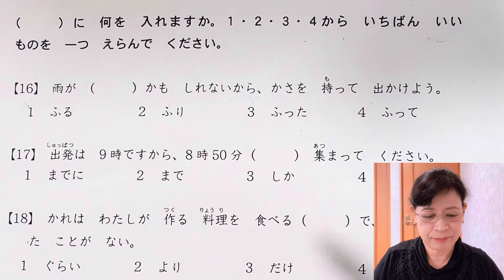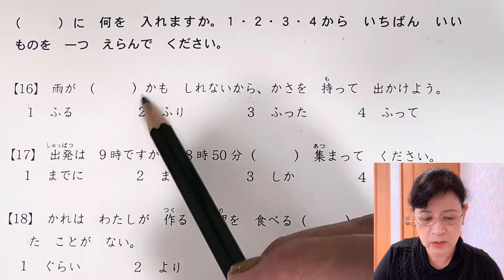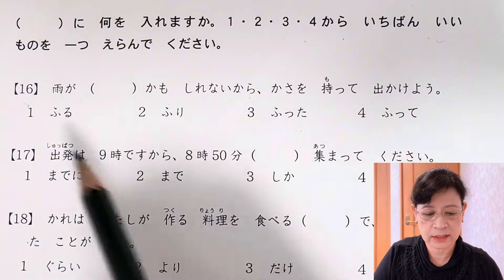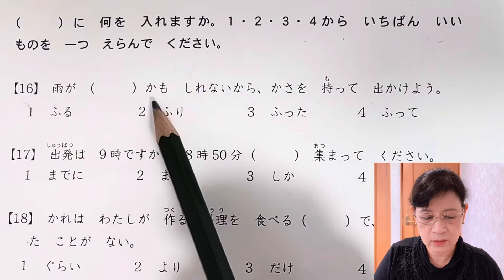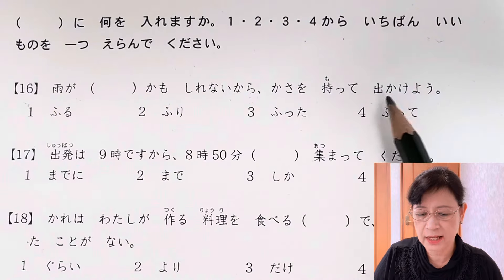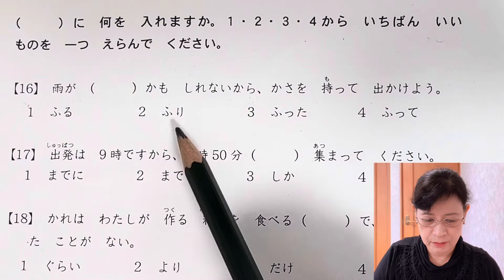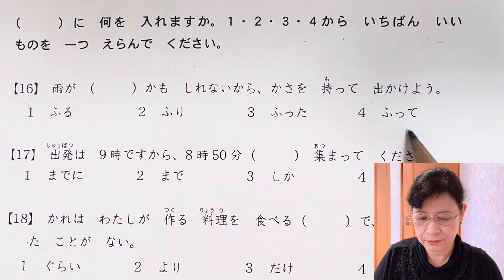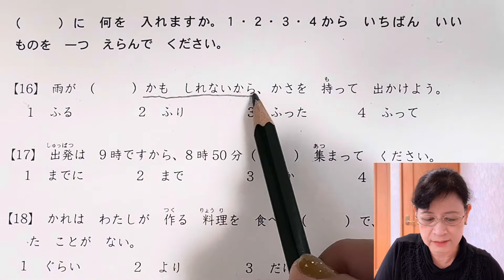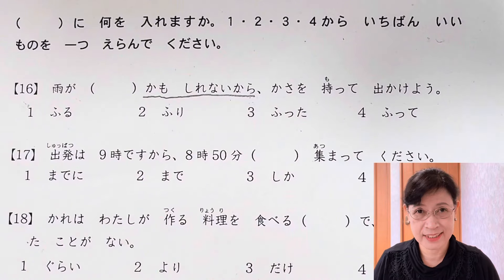Number 16: 雨がかっこかもしれないから傘を持って出かけよう。The choices are ふる、ふり、ふった、ふって.